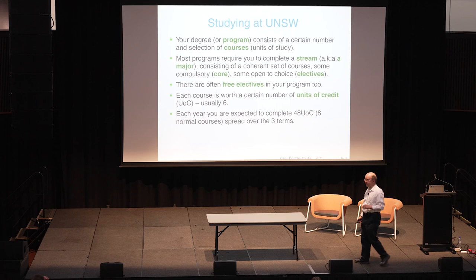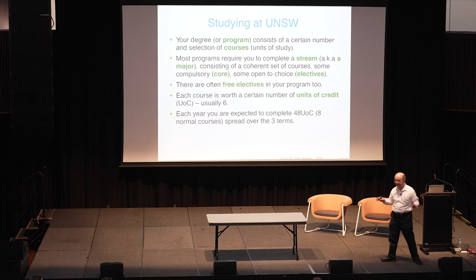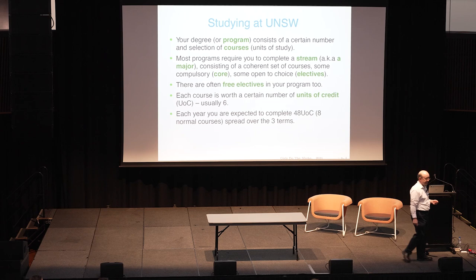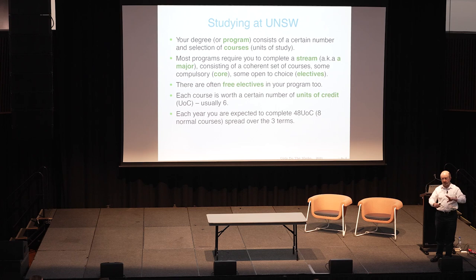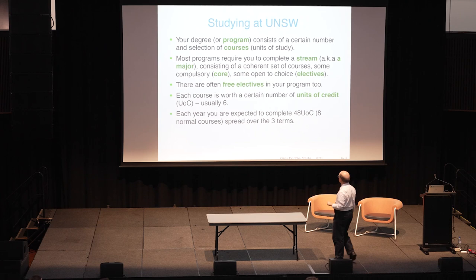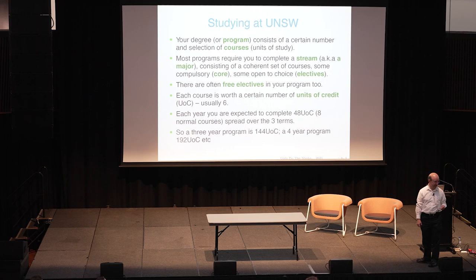Those eight courses can be spread over the three terms as three-three-two, or three-two-three, or two-three-three, whichever is convenient for you. You can even do nine courses in a year if you want, enabling you to finish a little quicker, or to allow yourself to do only seven courses in another year — or if you fail a course, you've got room to repeat it. A three-year program would be 144 units of credit — 24 courses — and a four-year program 192 units of credit.